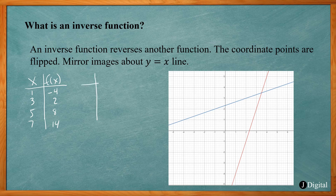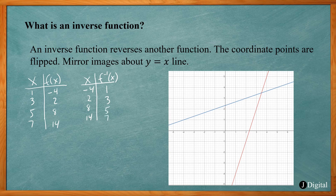Now my inverse function, which we denote as f negative one of x — that's the notation for inverse function — takes negative 4, 2, 8, and 14 as inputs. So if I input negative 4, I get out 1. If I input 2, I get 3. If I input 8, I get 5. And if I input 14, I get 7. The x and y values are switched in both functions.